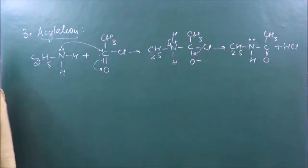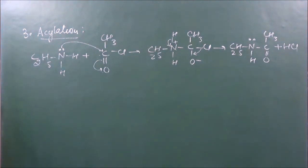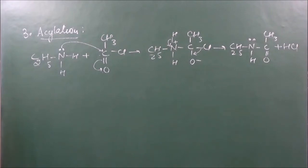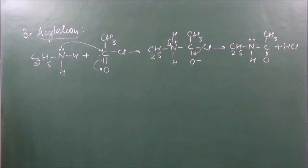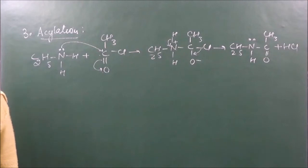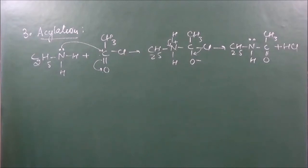After HCl is removed, we get C₂H₅–NH–CO–CH₃ plus HCl. This is N-ethyl ethanamide. This reaction takes place in the presence of a base because HCl is present and needs to be neutralized. Generally, we react in the presence of a stronger base than the amine. Most commonly in textbooks, pyridine is used - its function is to remove HCl from the reaction mixture and make it neutral.